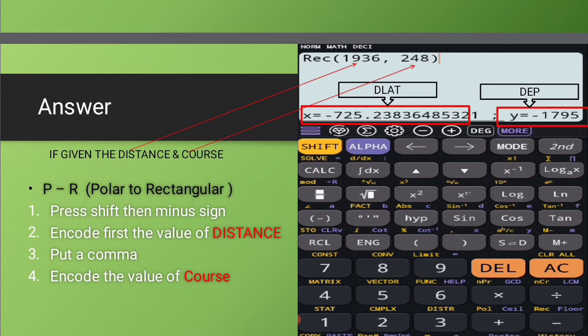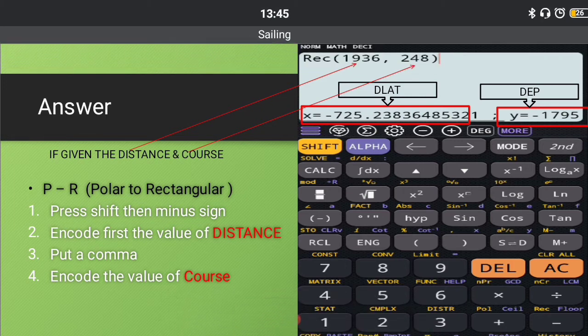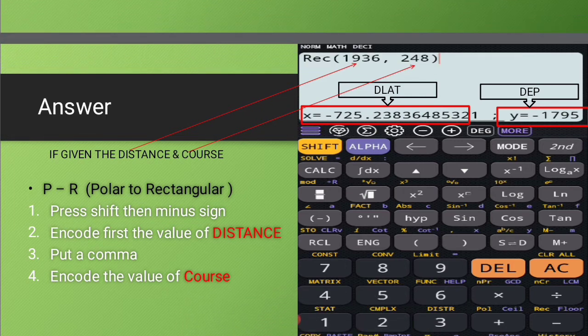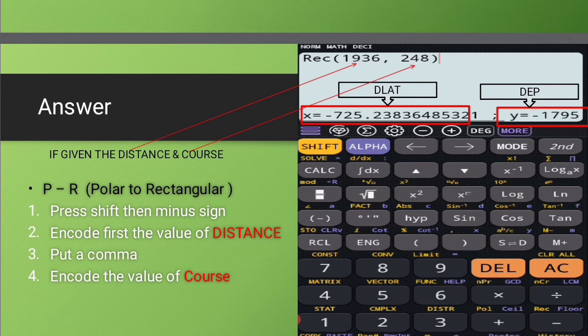you can encode the value for the course, which is 248. And right after encoding the value of the course, which is 248,